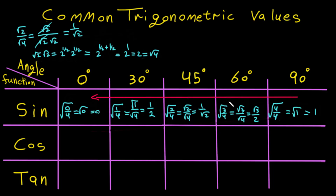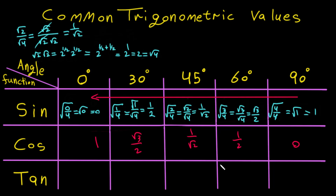For cosine values, you just reverse the sine values. So you start from the end and go back to the beginning: 1, then square root of 3 over 2, then 1 over square root of 2, then 1 over 2, and finally 0. It's very simple — if you know sine, you know cosine as well.